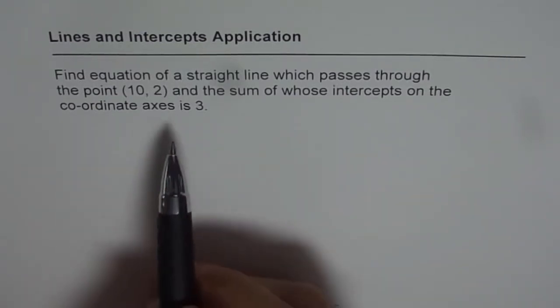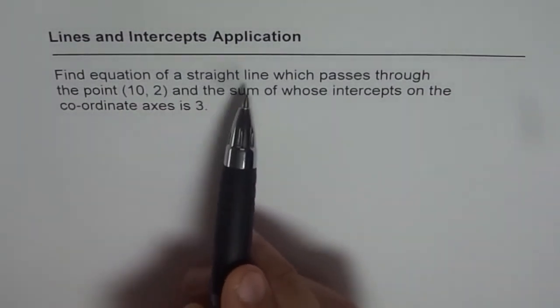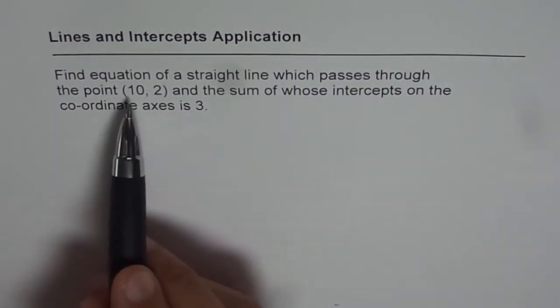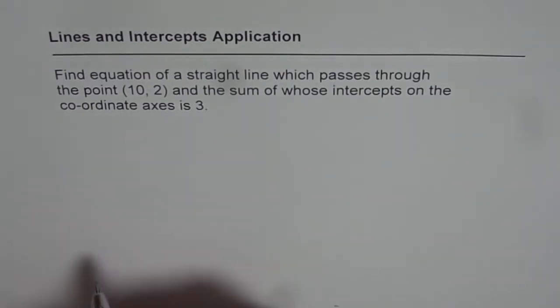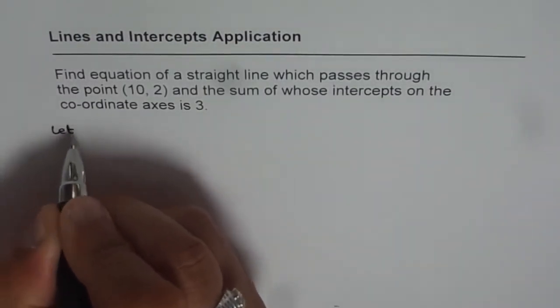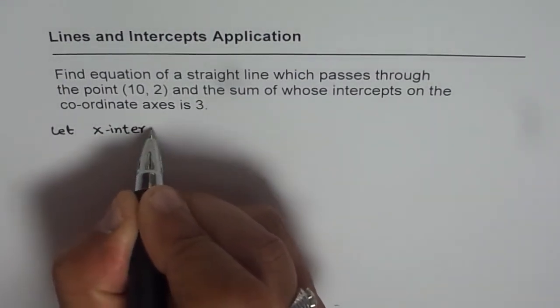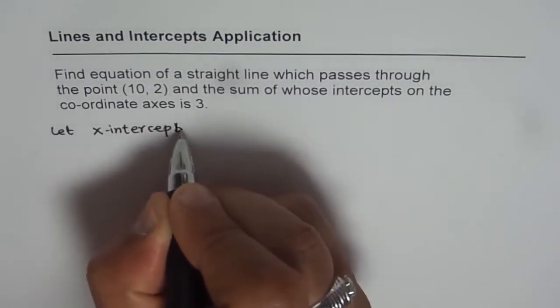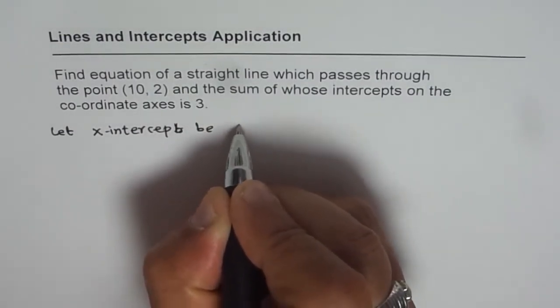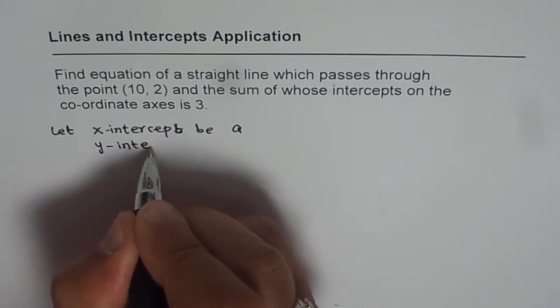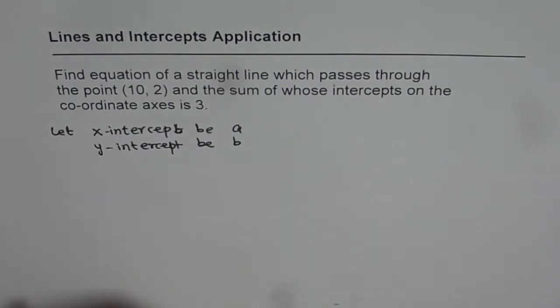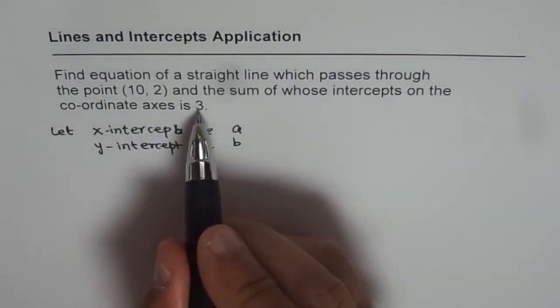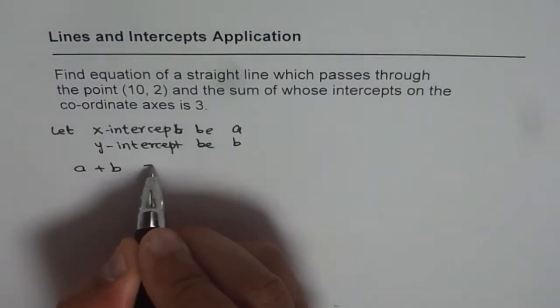Let's read the question once again. It says find equation of a straight line which passes through the point (10, 2) and the sum of whose intercepts on the coordinate axes is 3. Let's start with the intercepts. Let x-intercept be A and y-intercept be B. Now, it says sum of these intercepts is 3. That means we have A + B = 3.